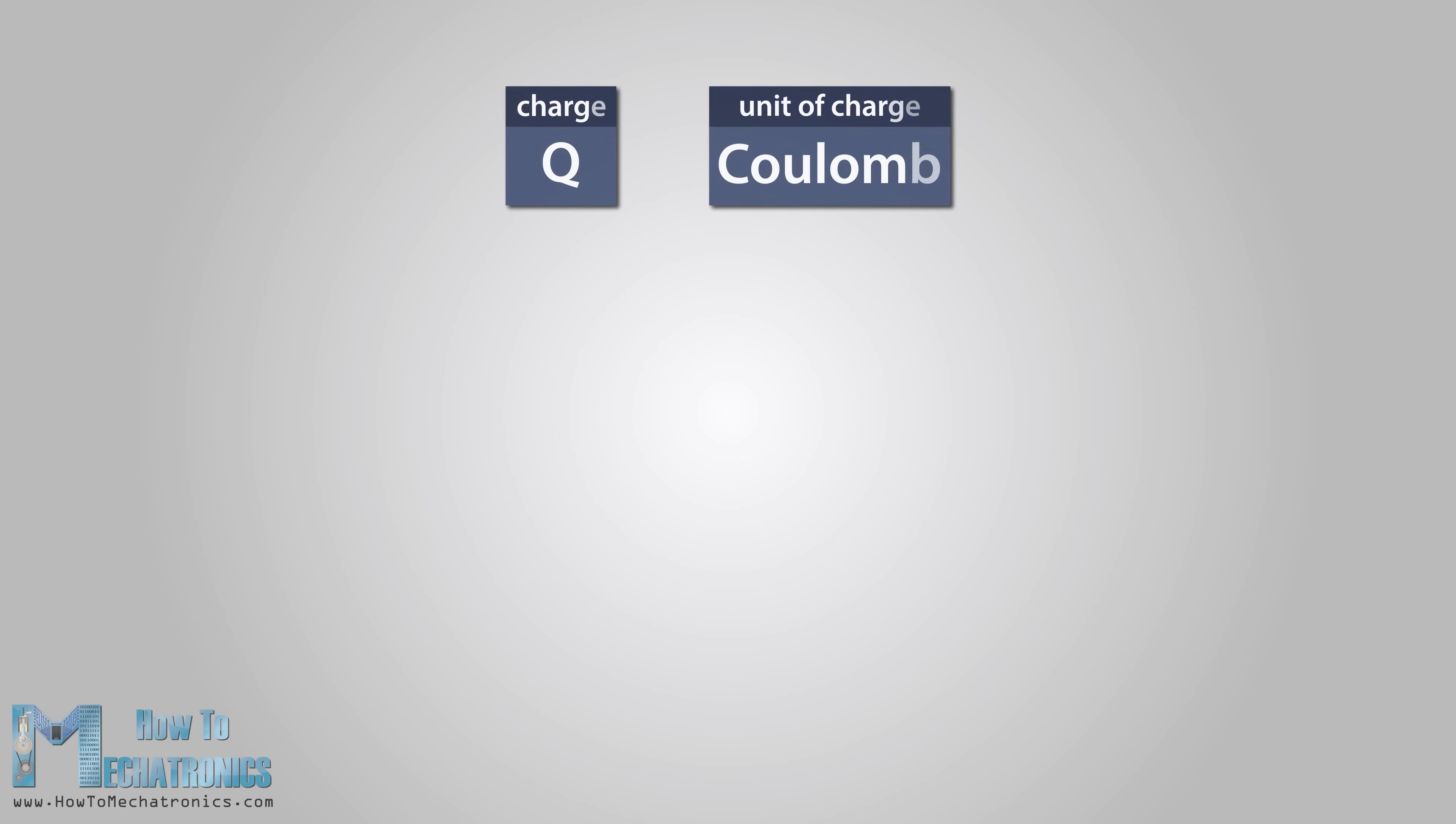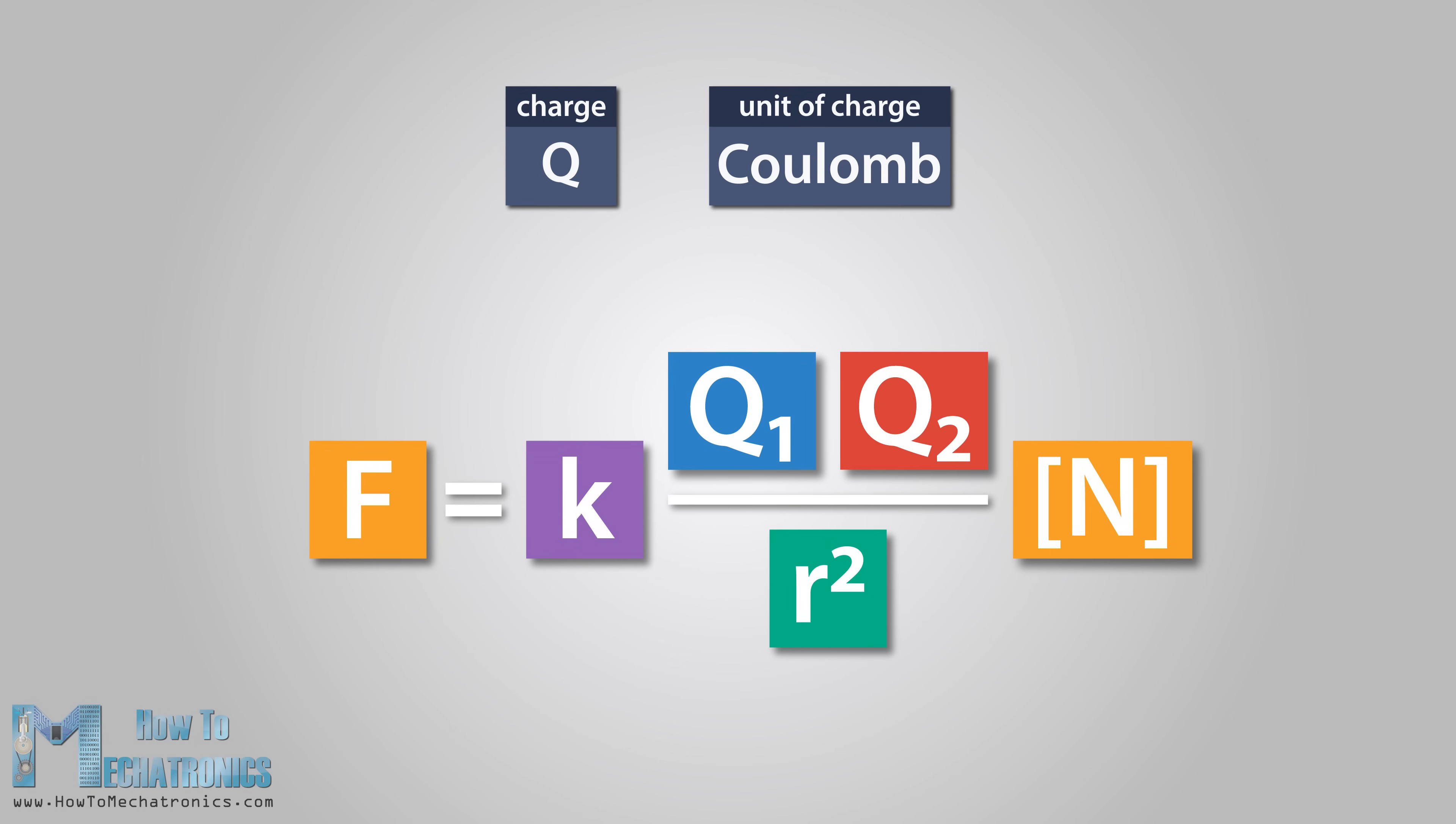We already know how to measure electric charge. This can help us calculate the electric force between charged objects. So this equation shows the magnitude of the electric force between charged particles. F is equal to the product of the two charges Q1 and Q2 divided by the square of the distance between them r, and then multiplied by the proportionality constant k. The electric force is expressed using the unit Newton.